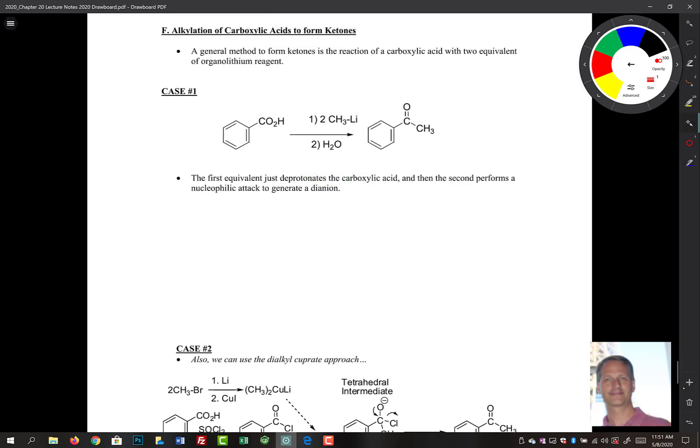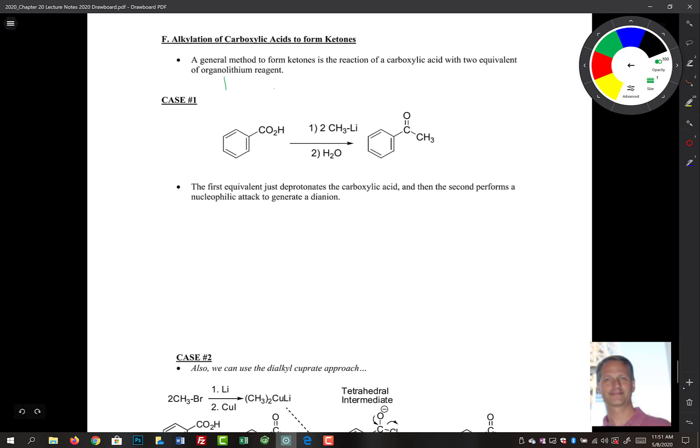Let's look at alkylation of carboxylic acids to form ketones. We're going to see here a general method to form ketones by reacting carboxylic acids with two equivalents of an organolithium reagent. It turns out that Grignards are not reactive enough to react with COOHs other than just doing an acid-base reaction. The general mechanism looks like this. We need two equivalents of these organolithium reagents, and then we follow that up with water in our second step.